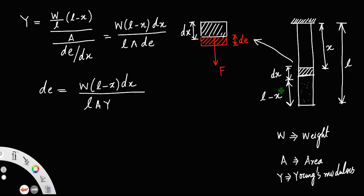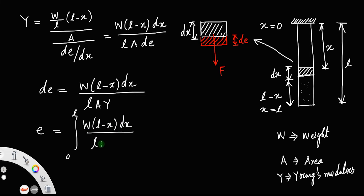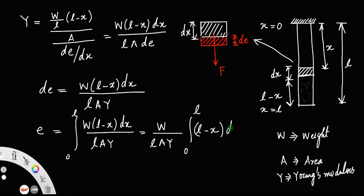In order to find the total extension produced, you must integrate since the variable is x. At the top x equals 0, and at the bottom x equals L. So you integrate from 0 to L: W(L minus x)dx divided by LAY. Taking W/(LAY) outside, integrate (L minus x)dx, giving Lx minus x²/2.